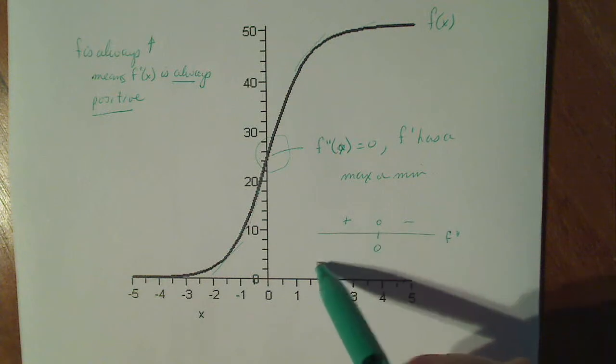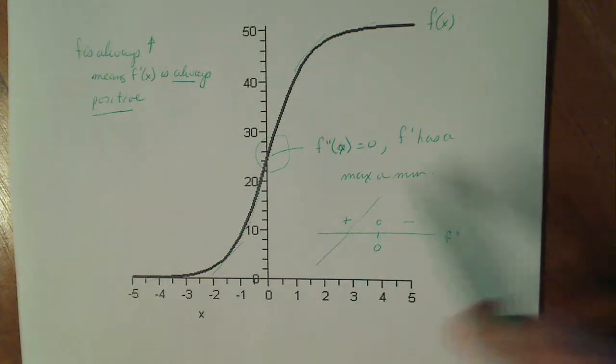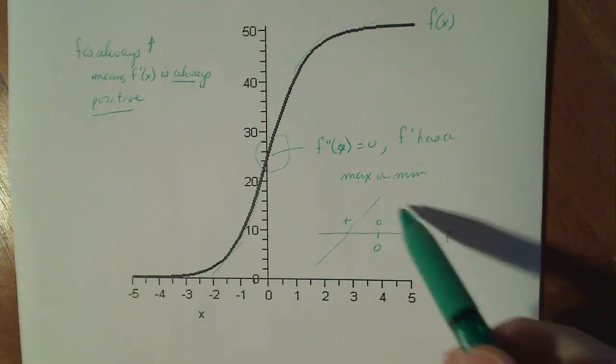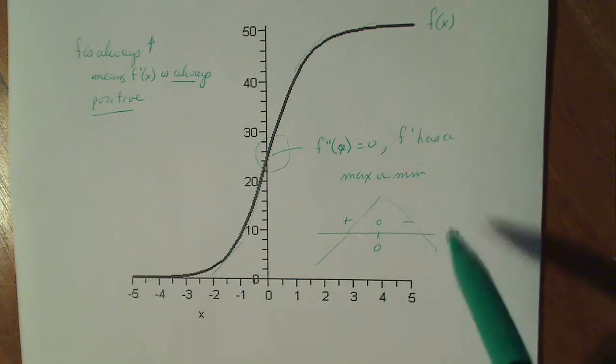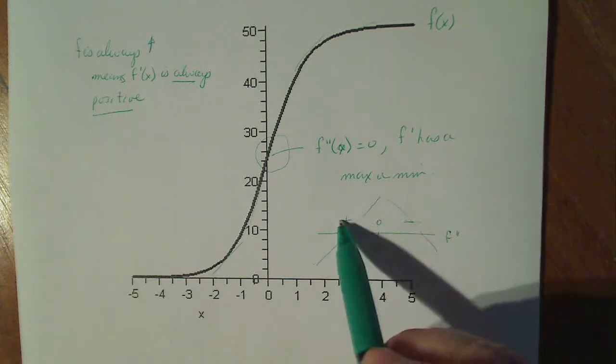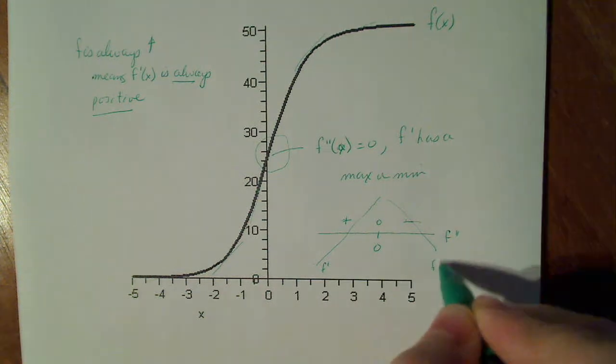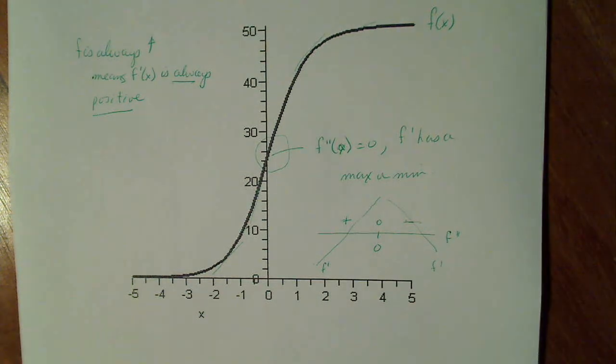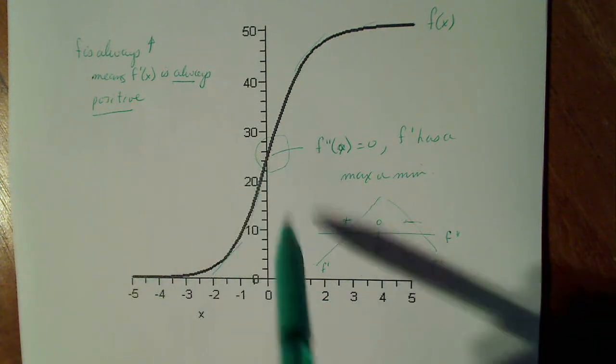So if f double prime is positive before zero, f prime will increase, and then f prime will decrease after zero because of these signs. So this is representing f prime in each of those places. So that means that f prime should be increasing before and decreasing after.